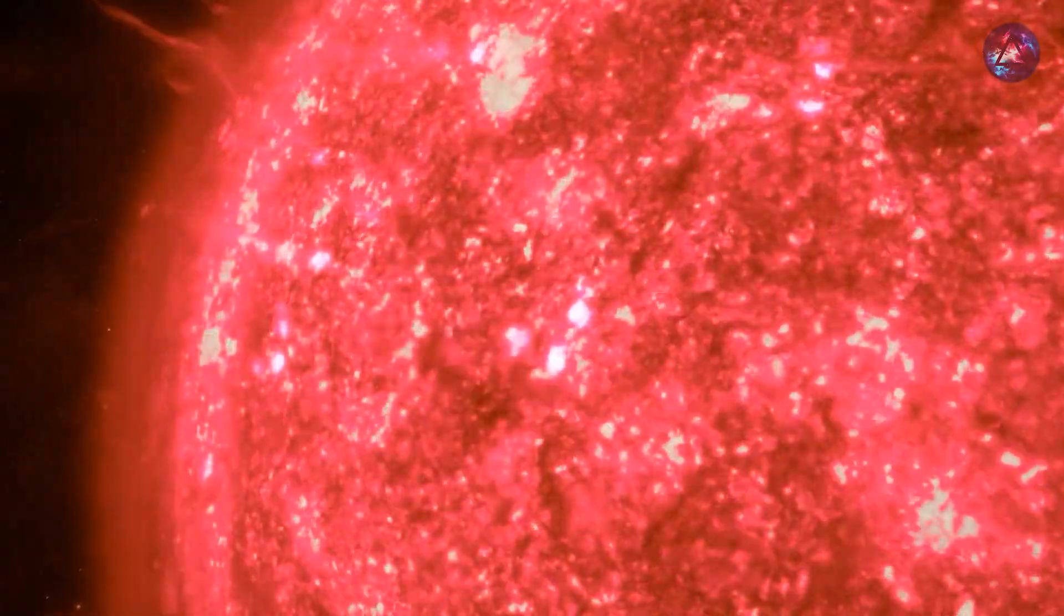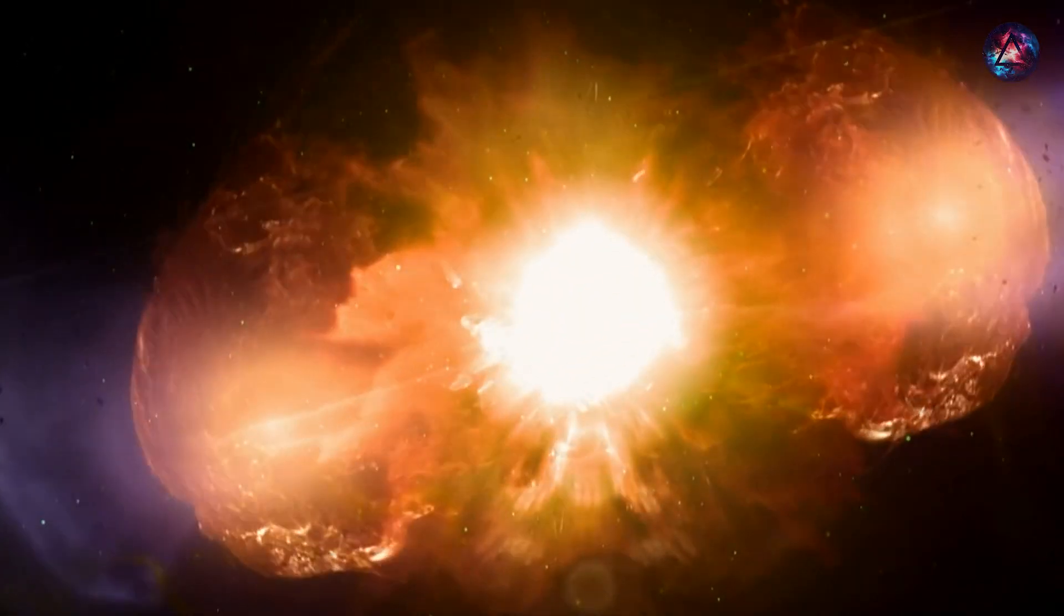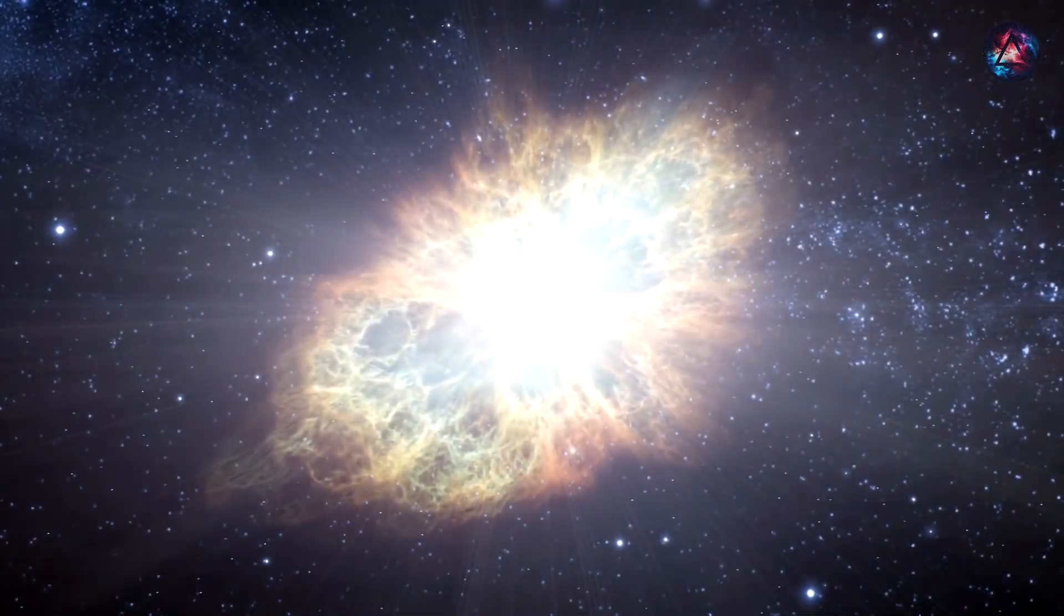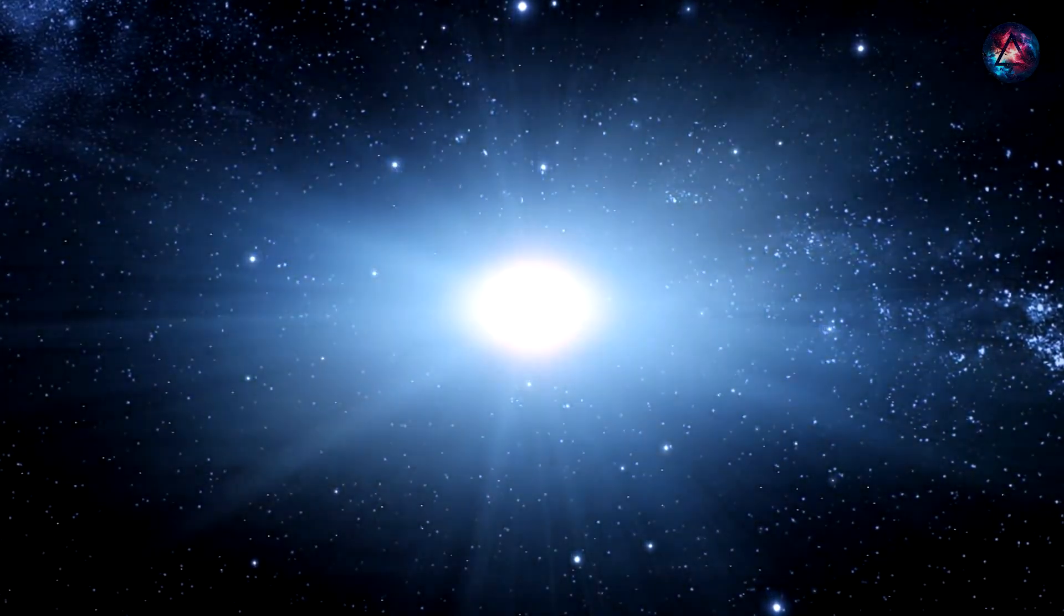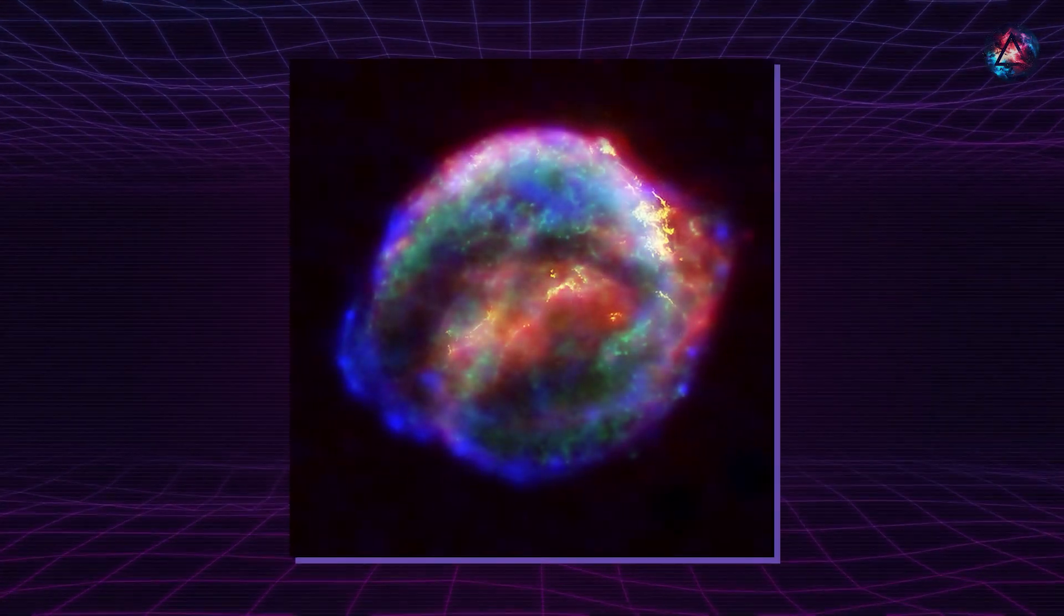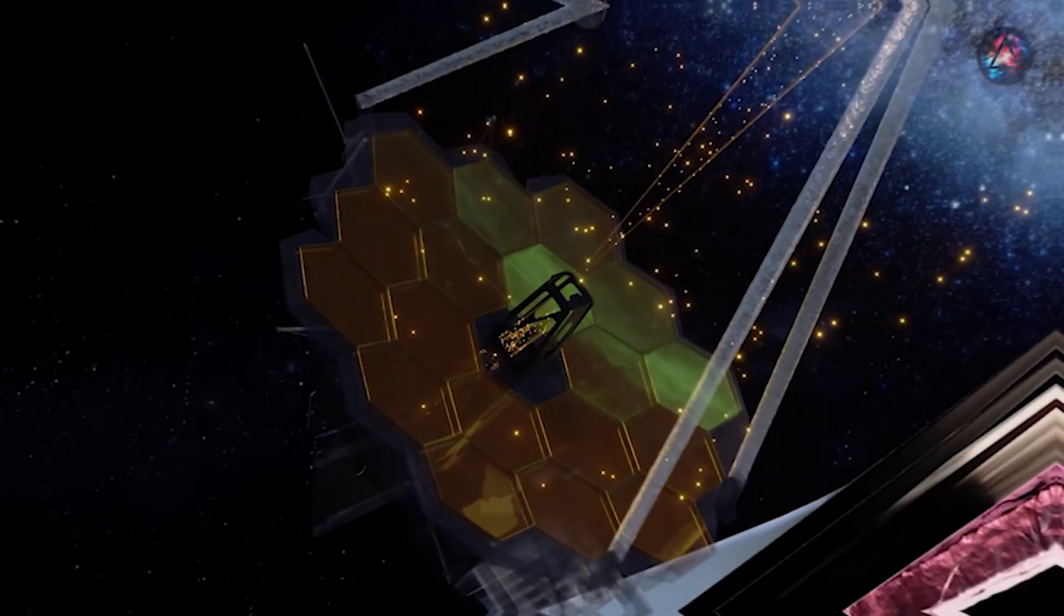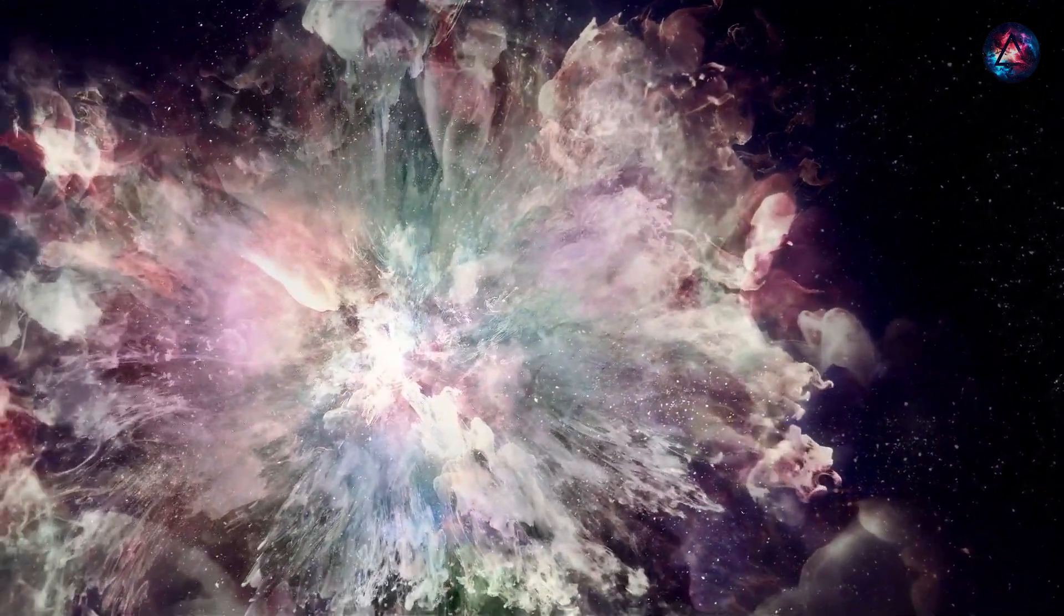The ongoing debate about Betelgeuse's potential supernova includes speculations about its imminent end or the possibility of tens of thousands of years left. The most recent supernova observed in our Milky Way galaxy was in 1604, with potential subsequent nearby supernovas hidden by atmospheric gas and dust. Instances like the Crab Nebula from a supernova in 1054 serve as remnants of explosive events. More recent observable occurrences include the 1987 supernova in the Large Magellanic Cloud and the Kepler supernova in galaxies beyond our Milky Way. Modern telescopes are better equipped to capture visible light and provide insights into how supernovae would appear if observed nearby.